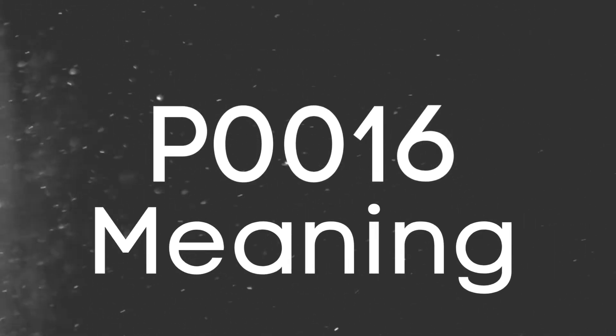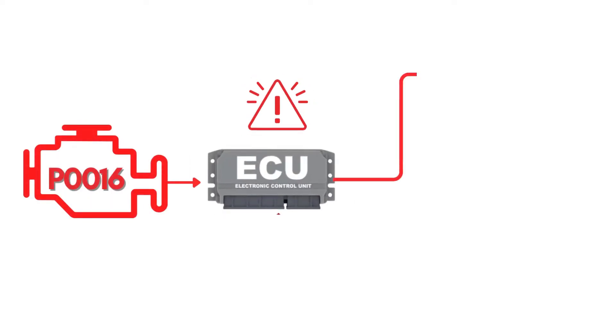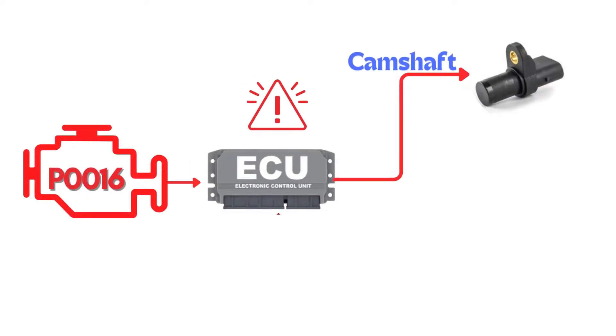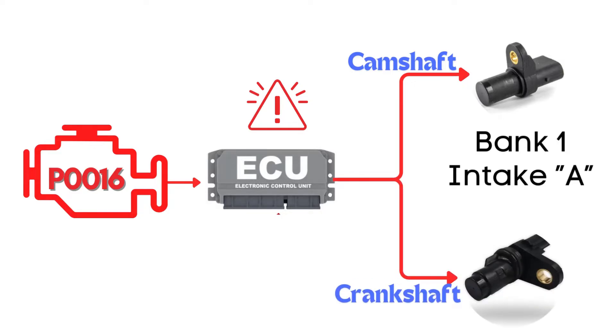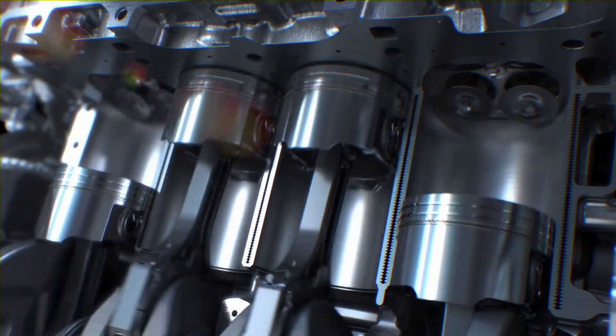First, let's understand what the P0016 code is. The P0016 code indicates that the ECM has detected a correlation error between the camshaft position sensor for bank 1, specifically the intake camshaft, and the crankshaft position sensor. This means there's a misalignment between the camshaft and crankshaft positions — but what does that mean for your engine?